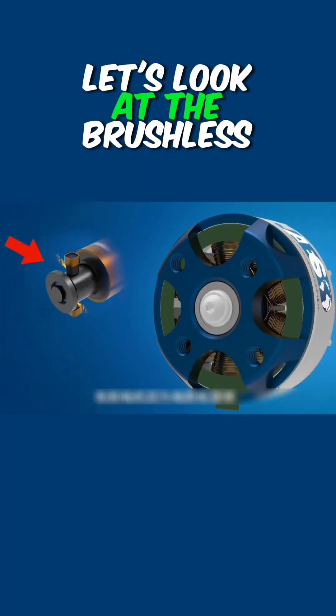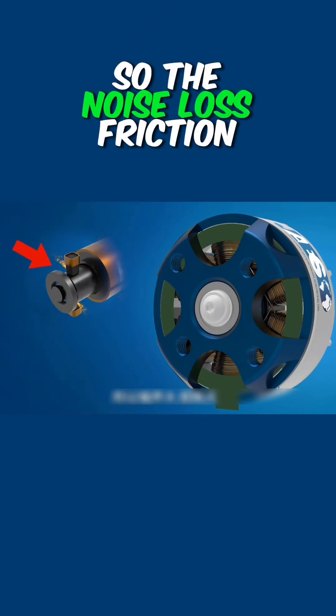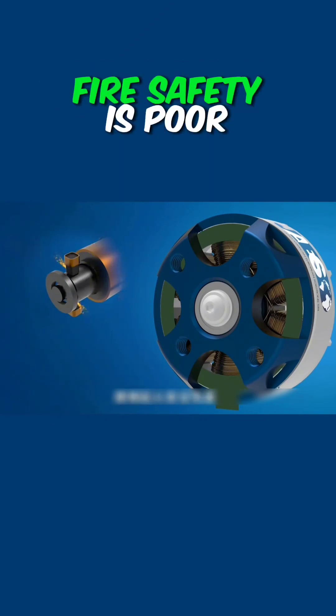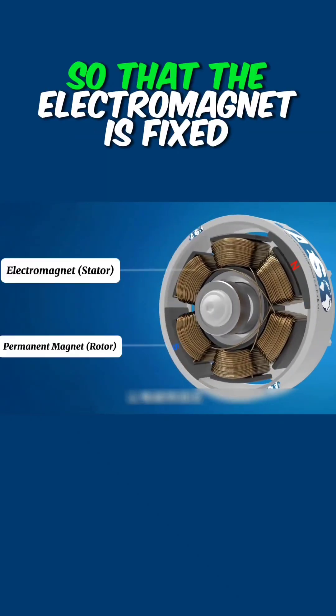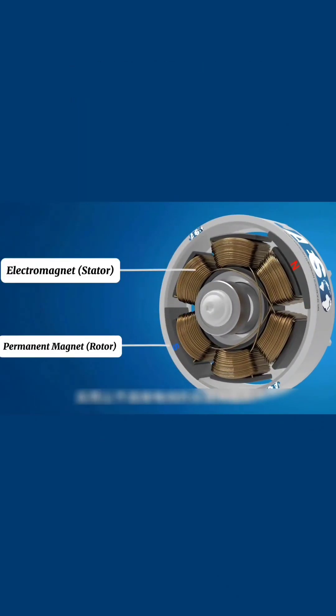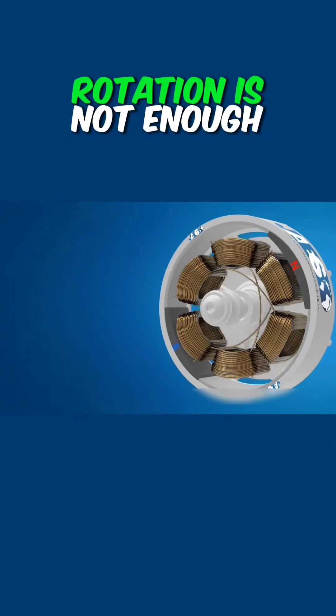Understanding this principle, let's look at the brushless motor. Brushed motors have friction from the brushes, causing noise, loss, and poor fire safety. We simply remove the brushes so the electromagnet is fixed. Instead, we let the permanent magnets, which are not connected to the wire, rotate.